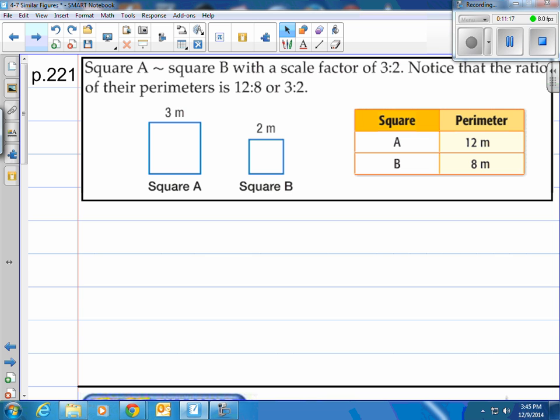Perimeters are also proportional. What it says here is it's square A and square B. They're similar. Square A is similar to square B with a scale factor of 3 to 2. Notice that the ratio of their perimeters is 12 to 8 or 3 to 2. If one side is 3, the other sides are 3 as well. When you add all those up, you equal 12 meters. Same with this square here that has 2. When you add all those up, that equals 8.